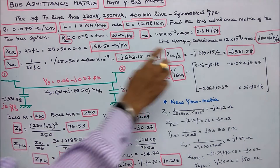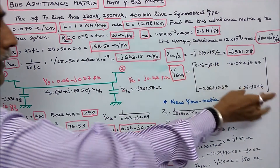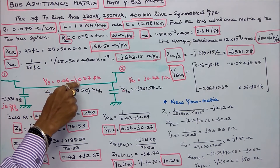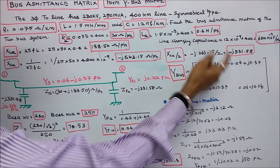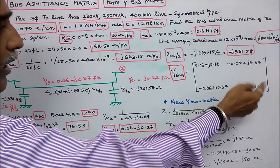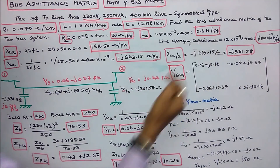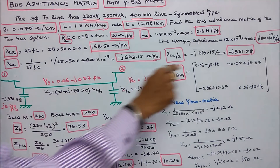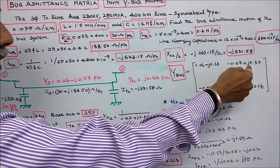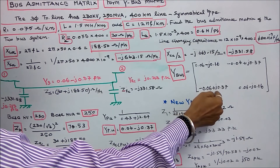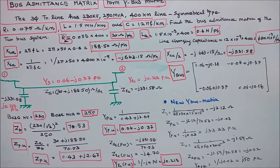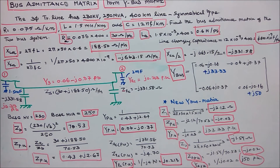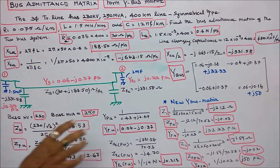Now I can form the Y-bus matrix. Since it is a symmetrical type, the diagonal elements are the same. Y₁₁ = Y_series + Y_shunt = (0.06 − j0.37) + j0.213 = 0.06 − j0.16. Off-diagonal element Y₁₂ = −(0.06 − j0.37) = −0.06 + j0.37. This gives the bus admittance matrix of the system.